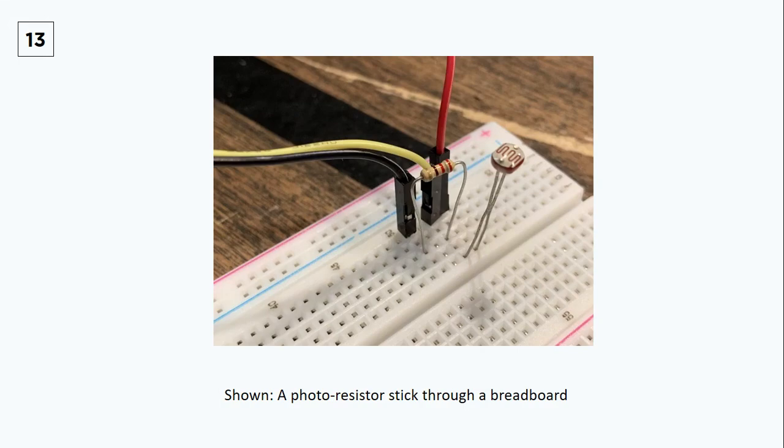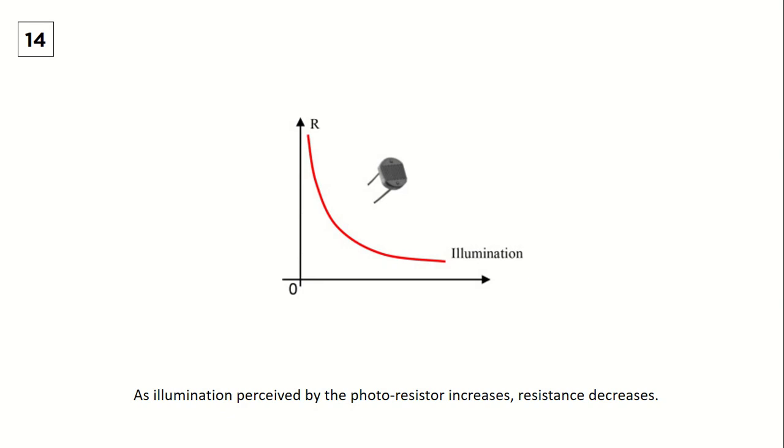Another type of resistor is a photoresistor, also known as light-dependent resistor. Unlike carbon film resistor, which has a specific resistance value, photoresistors can give variable resistance. Its resistance decreases as lighting increases.